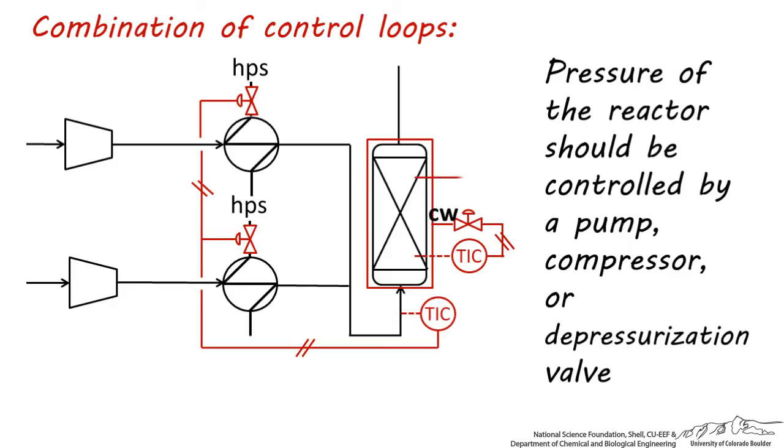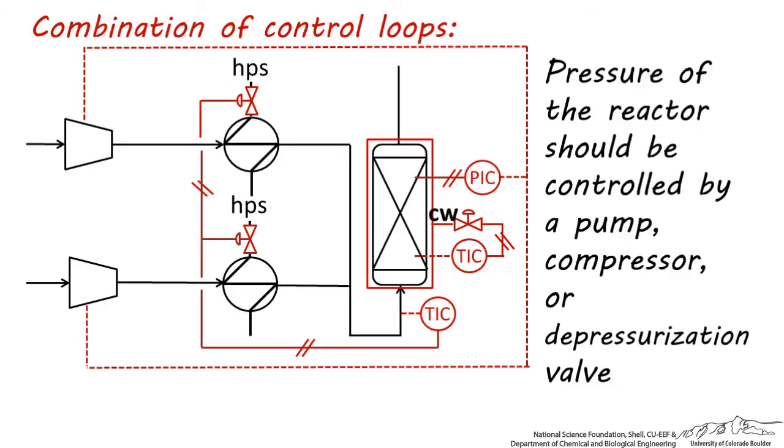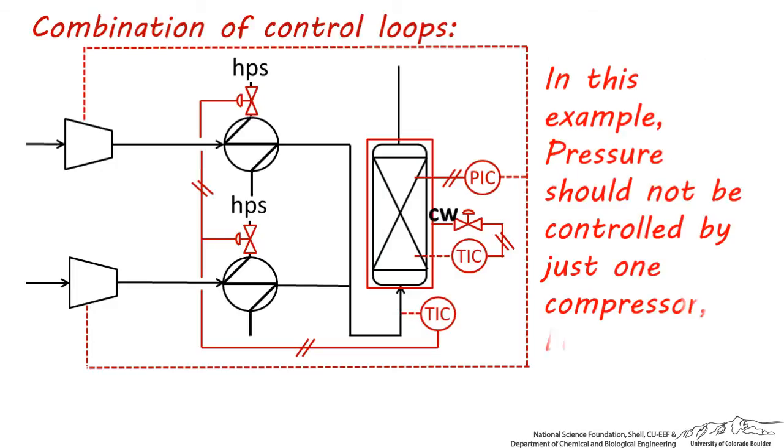It's a good idea to measure pressure inside the reactor, or even right before the reactor. Send that signal to a pressure indicator controller, which then will send an electrical signal to vary the power sent to each of these compressors. Depending on the power required for each of these compressors, power can be increased or decreased to evenly vary the pressure of the process stream. Just as with the heat exchangers, the pressure should not be controlled by just one compressor. This is because these pressures should be nearly equivalent when the streams are combined here before the reactor.